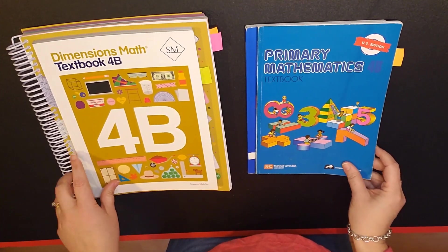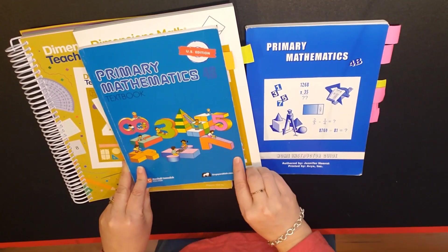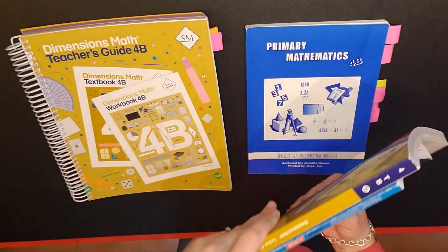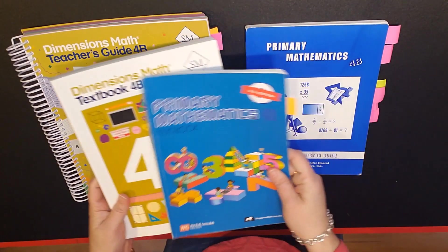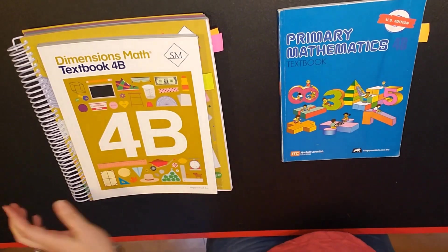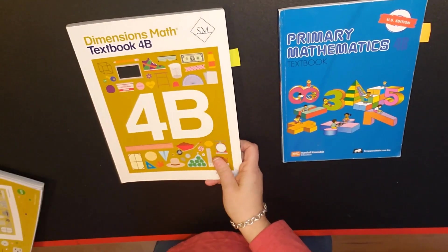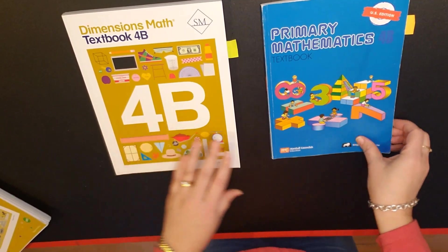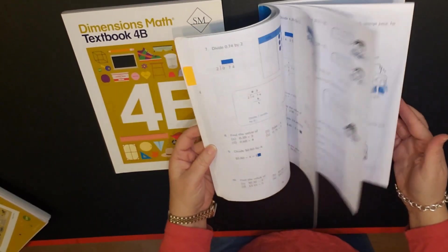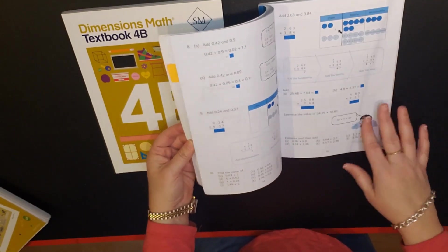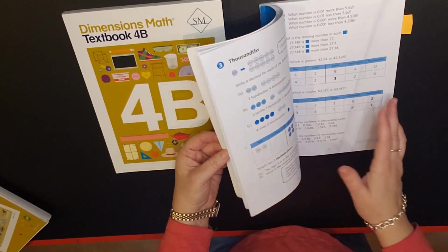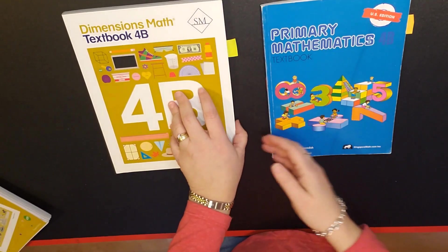Now for the textbooks, first of all dimensions is larger and also thicker, and one of the reasons is the amount of information that's given on each page. So primary math is in blue, black and white and you can see that they do have some pictures but there's a lot on the page and it's just blue, black and white.